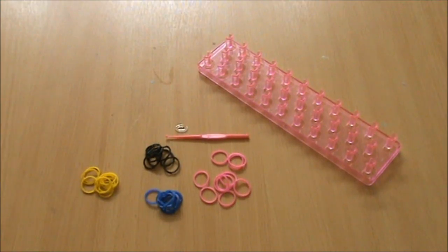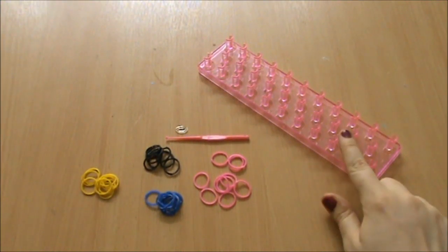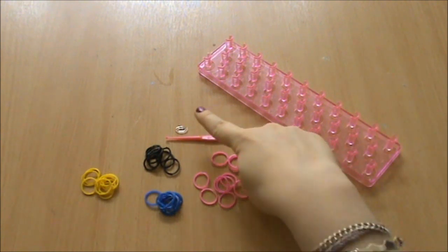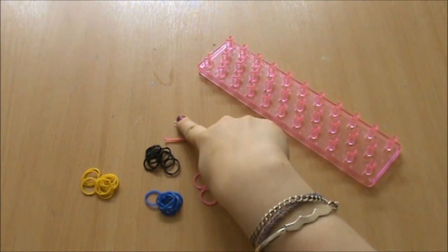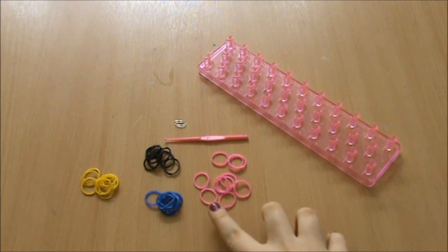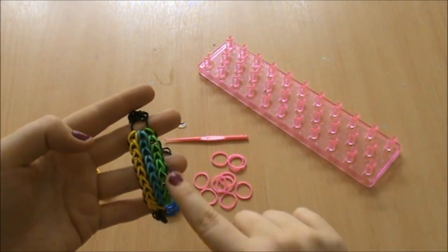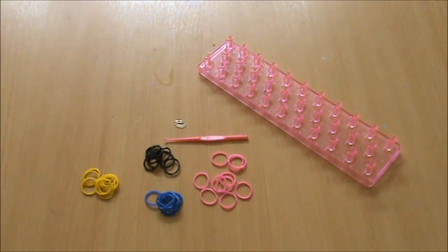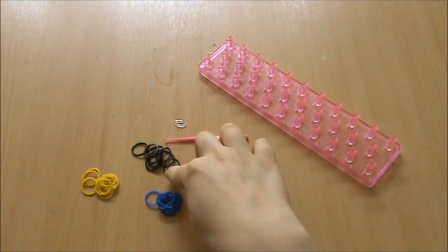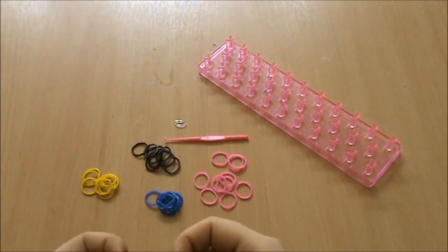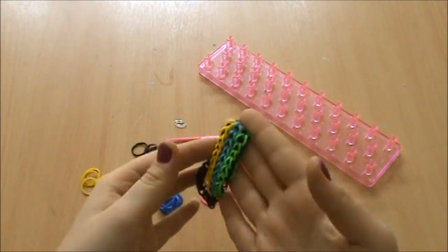So to make this bracelet you are going to need your loom, a hook, you're going to need one C-clip or S-clip, you are going to need 10 of each of the outside colours of the bracelet, so for example that's 10 of the yellow and 10 of the green, you're going to need 9 of the inside colours and then 9 of the background colours. Then you're also going to need some extra ones of the background colour to make your extension chain, so your bracelet fits around your wrist.